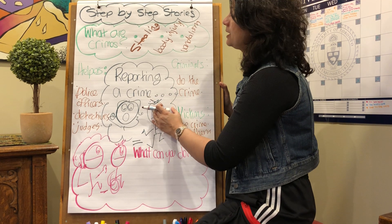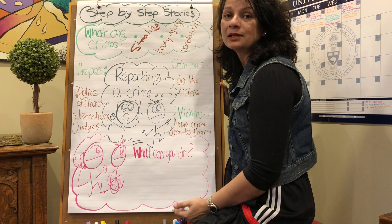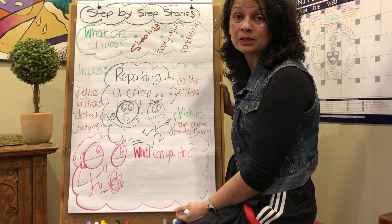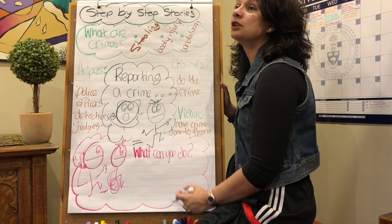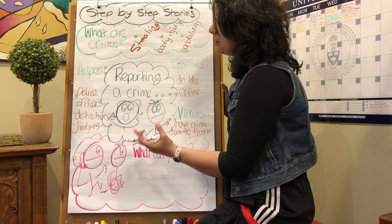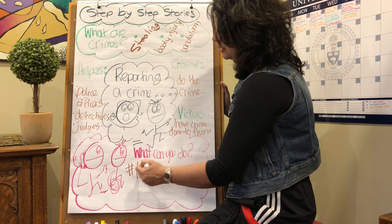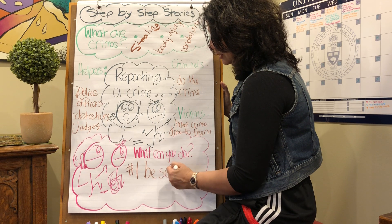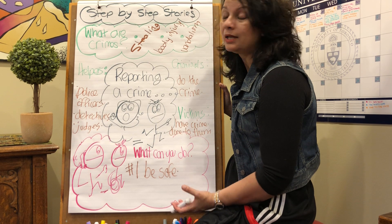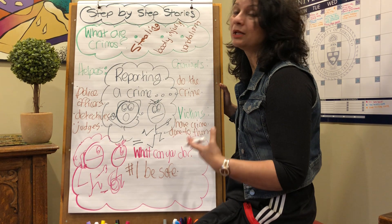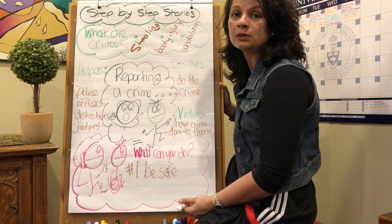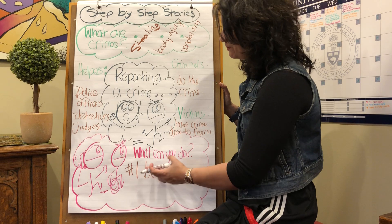What can you do if you suspect someone has stolen something from you, if somebody is threatening you with bodily harm, or if you come home and see that somebody has damaged your property? First and foremost: be safe. If somebody is trying to hold you up and asking for your cell phone or wallet, give it to them. Do not try to fight to keep your belongings — make sure your body is safe.